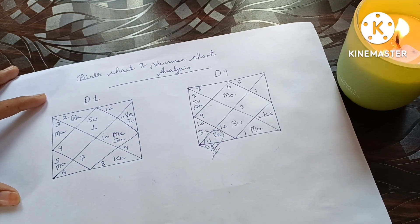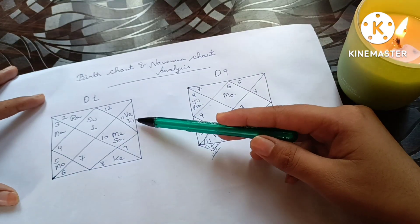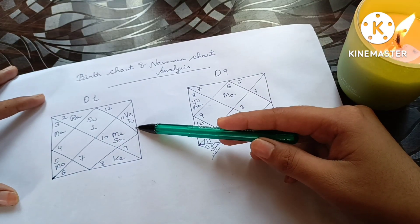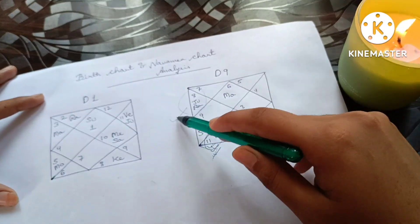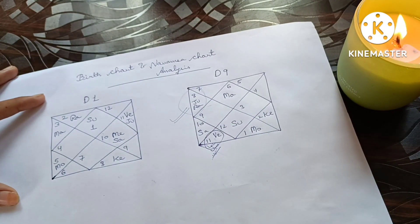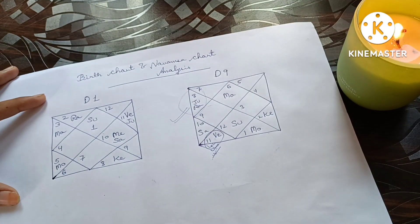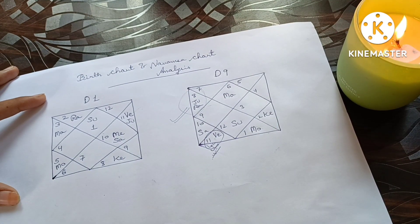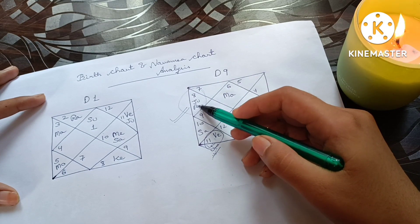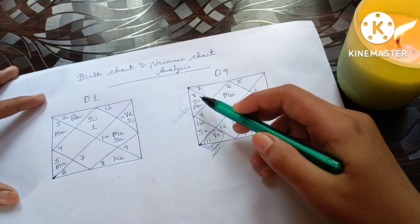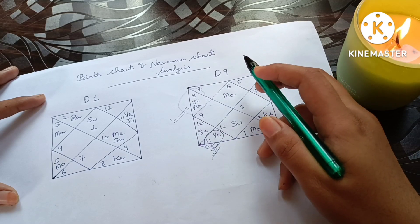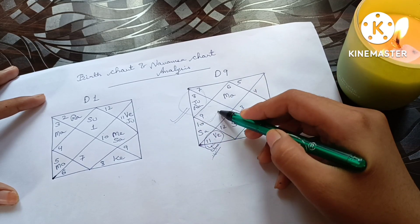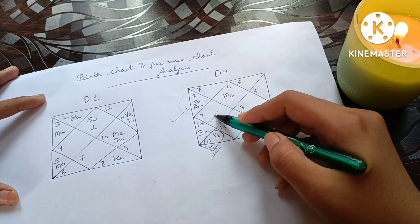Jupiter is good in the 11th house in the birth chart, which is considered very good. But in the Navamsha it goes into a debilitated sign and is conjunct with Rahu, which is not a good place for Jupiter. This means the native can face issues related to relationships, mother, and homeland.